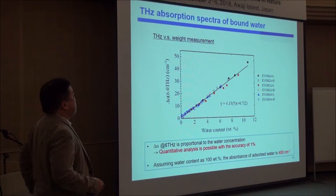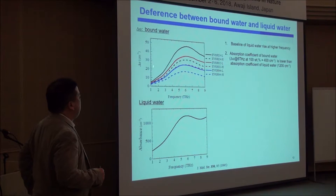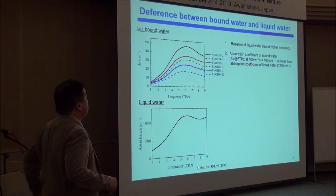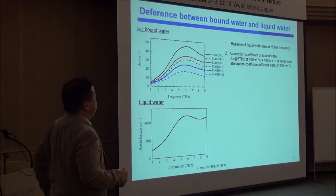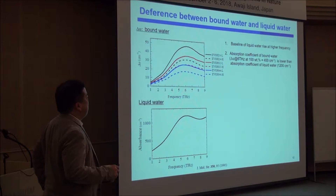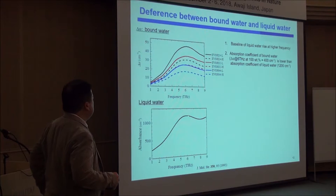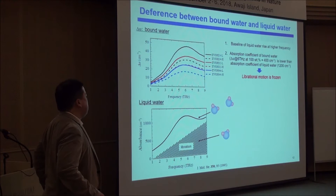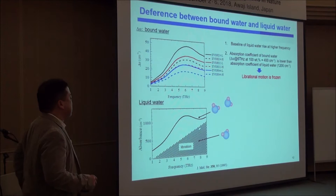Next, we compared the spectra of bound water with those of liquid water from the literature. There are clear differences. First, the baseline is different — the spectra of liquid water rises at higher frequency, but this is not so pronounced in the bound water. Also the absorbance is lower. There is something missing in the baseline, which must be the tail of librational motion. This librational component seems to be missing in the bound water.